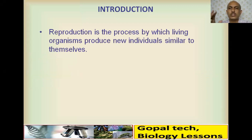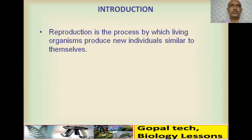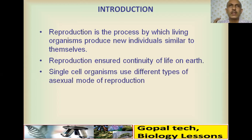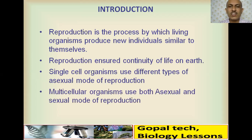Reproduction is the process by which living organisms produce new individuals similar to themselves. Reproduction ensures the continuity of life on earth from generation to generation. Single-cell organisms use different types of asexual mode of reproduction, while multicellular organisms use both asexual and sexual modes of reproduction.